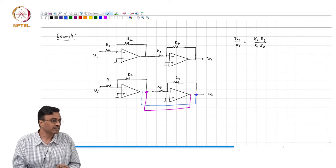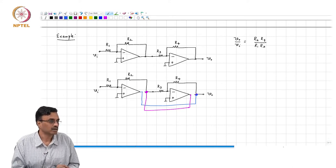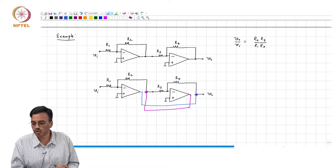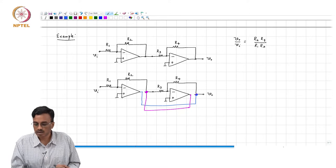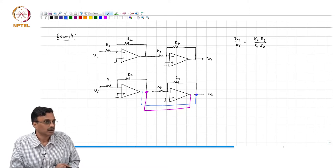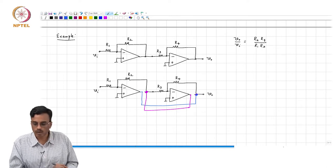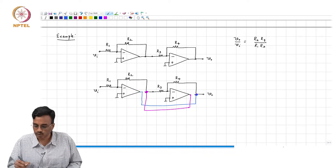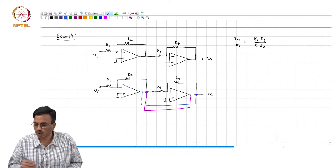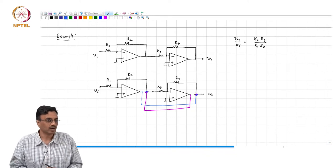Our claim is: what should happen or what should not happen? Nothing should change, right. As far as the node voltages are concerned. In other words, this voltage must remain what it was and this voltage must remain what it was.